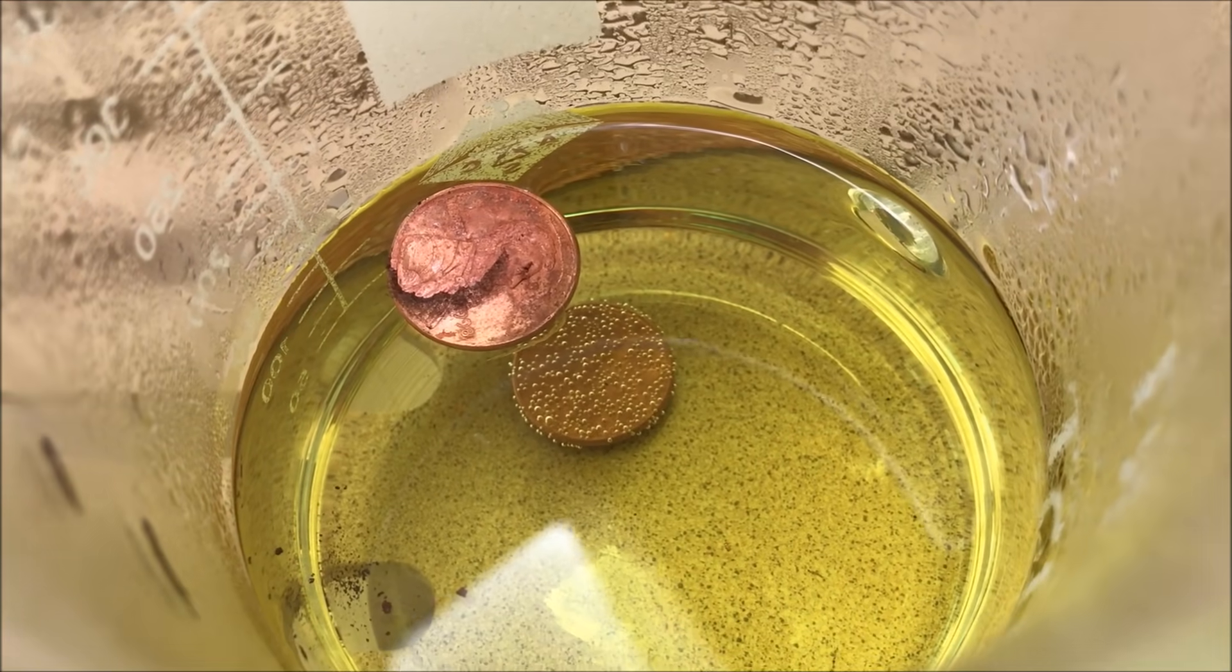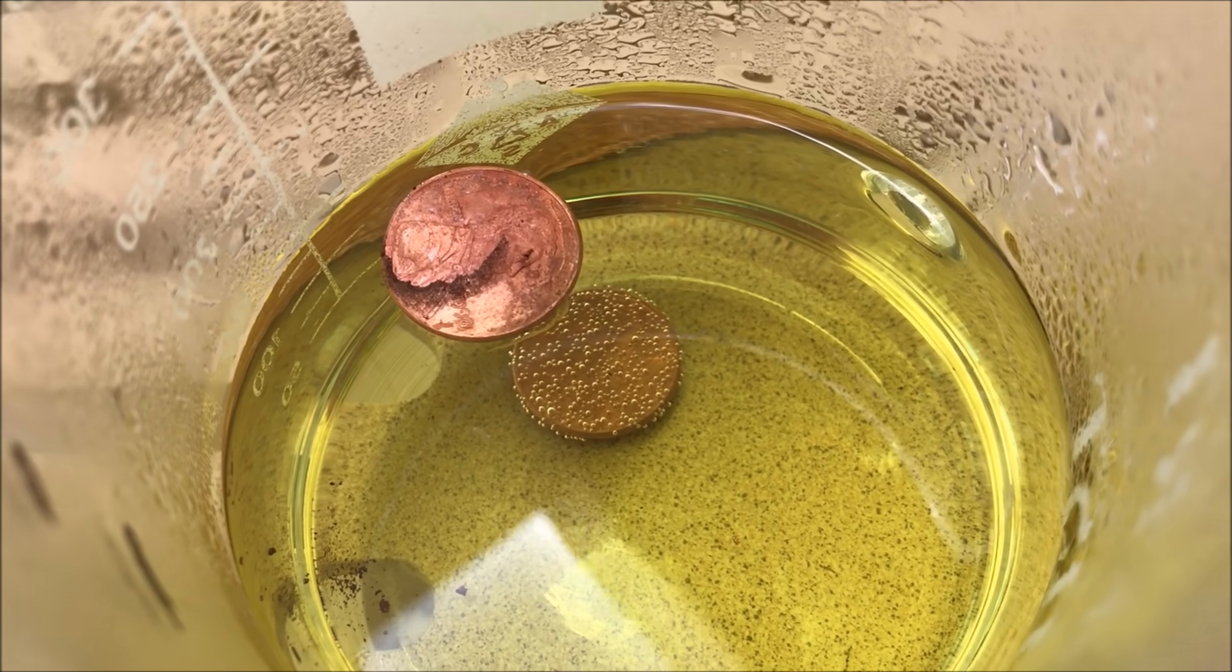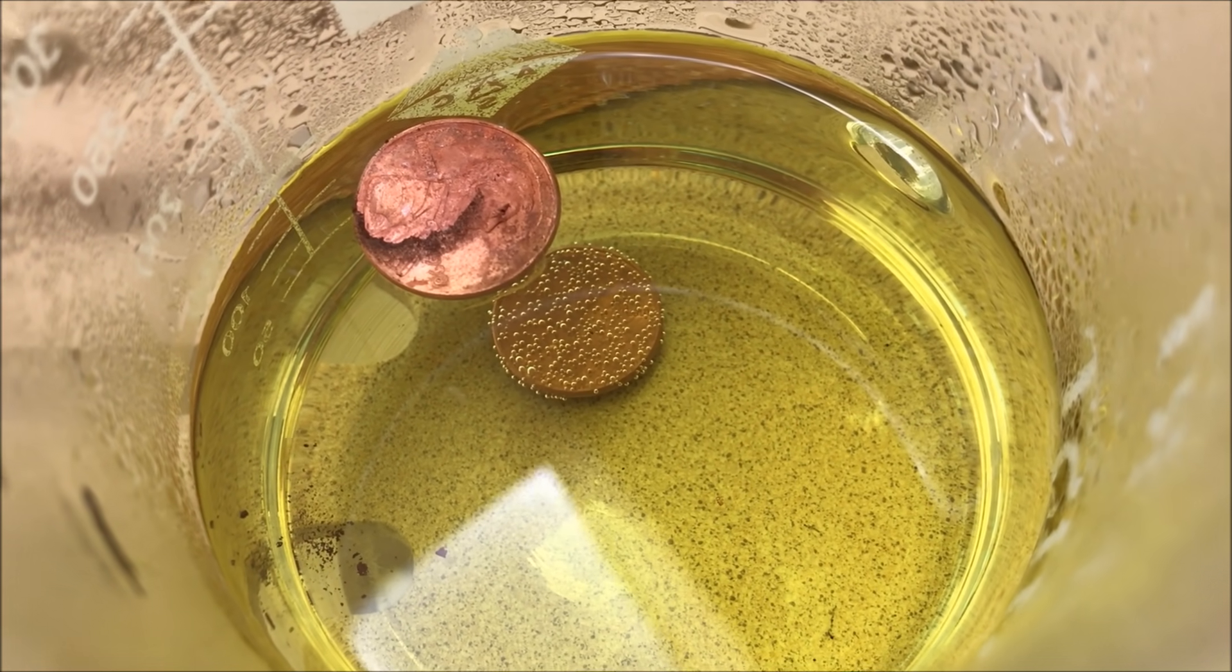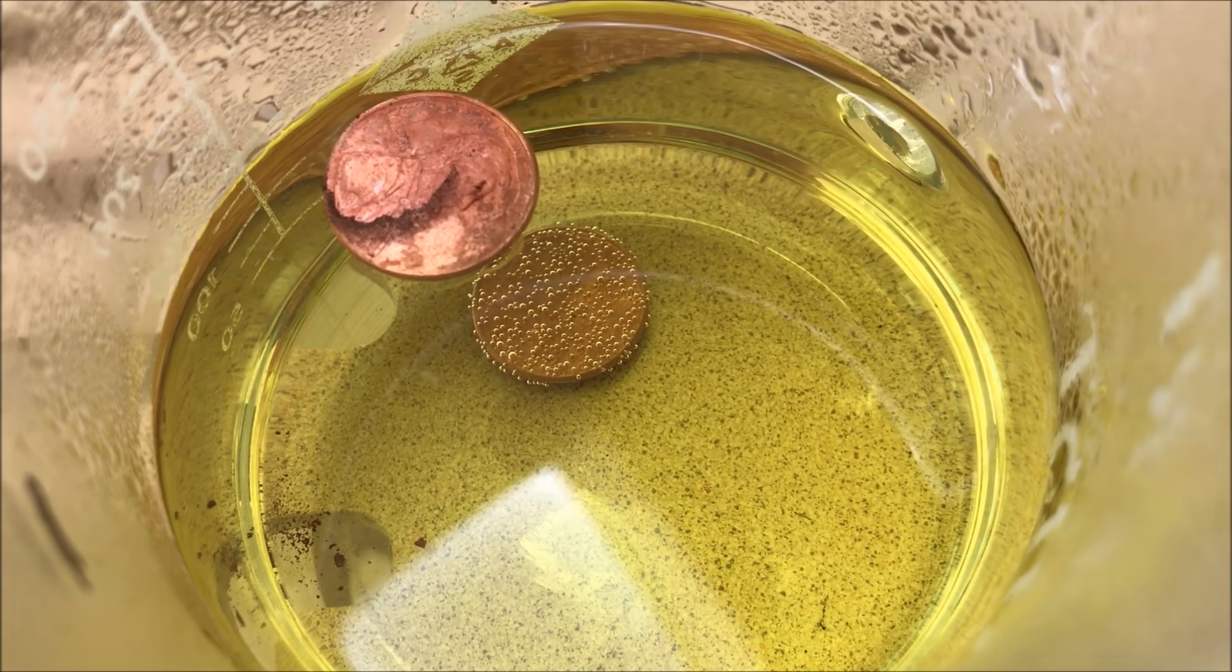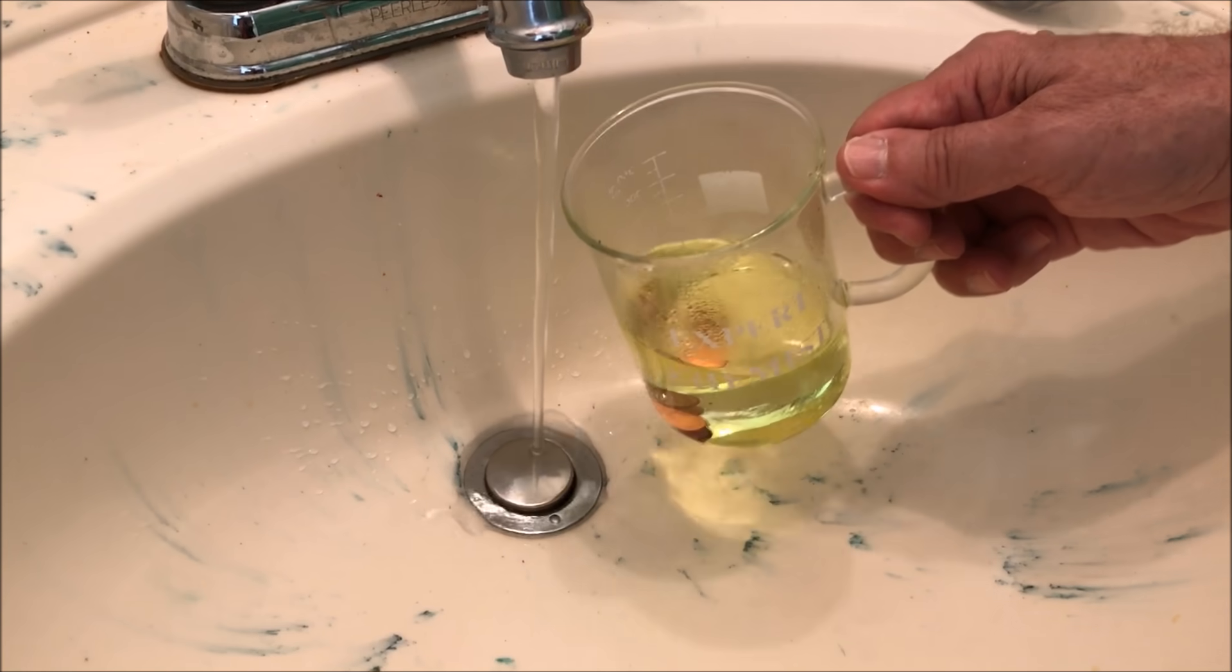We can also see that the substance has turned yellow but that is not related to this reaction. As far as we know, it could be chlorine. We're going to dilute it.